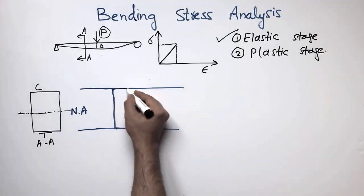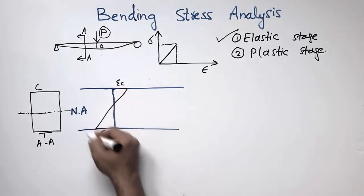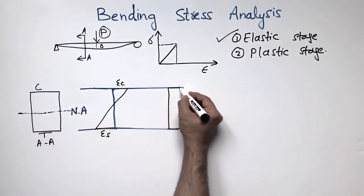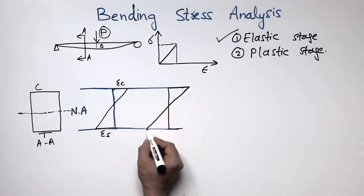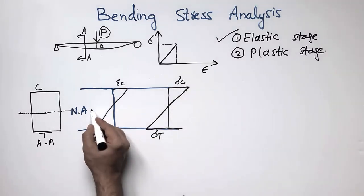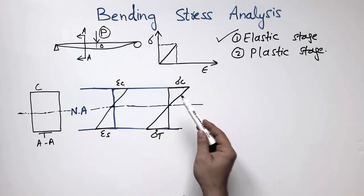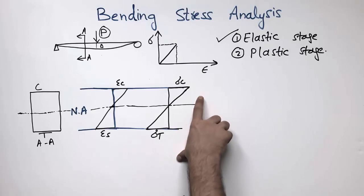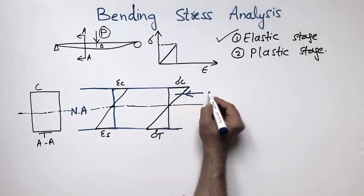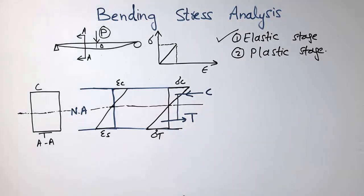The strain diagram for this beam shows the strains in the elastic region. Similarly, the stress diagram shows compression stresses on one side and tension stresses on the other, while the neutral axis continues throughout the cross-section of the beam where stresses change from compression to tension. The compressive force acts at one-third of the triangle from the top, and the tension force acts at the corresponding point at the bottom.